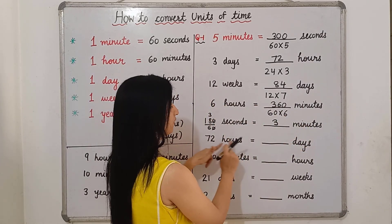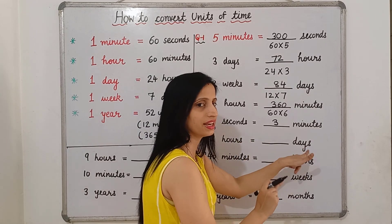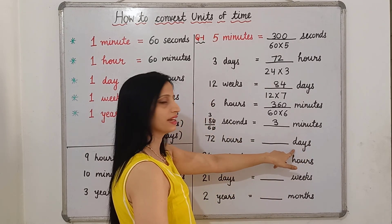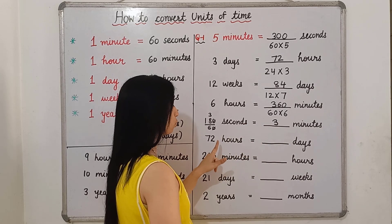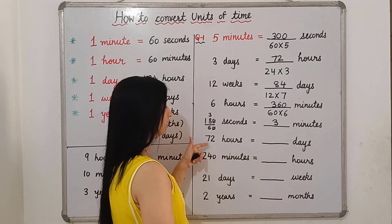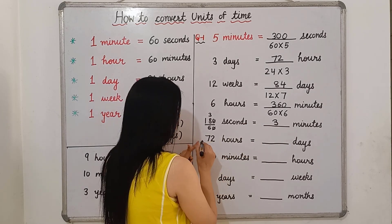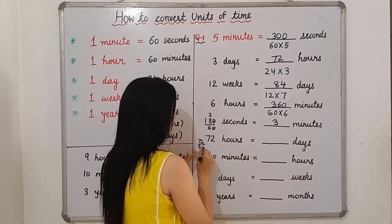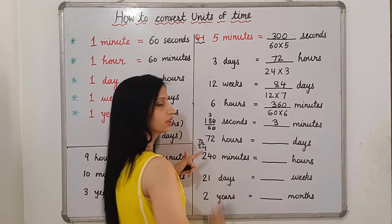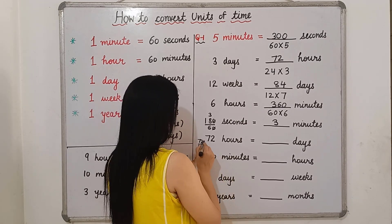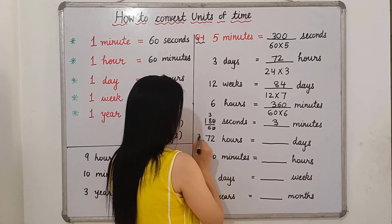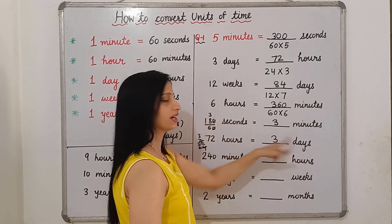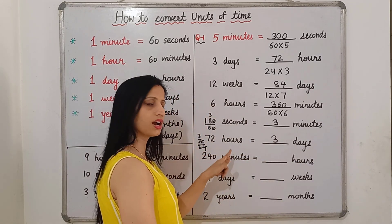72 hours is equal to how many days? In 1 day there are 24 hours, so we will divide by 24. 72 divided by 24 gives us 3. So in 3 days there are 72 hours.